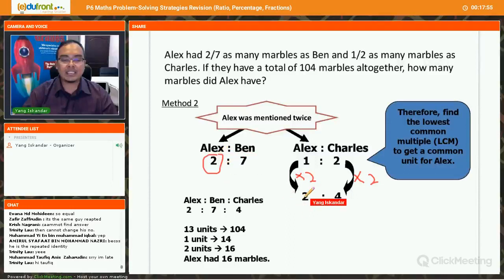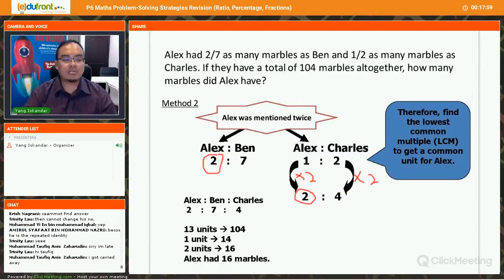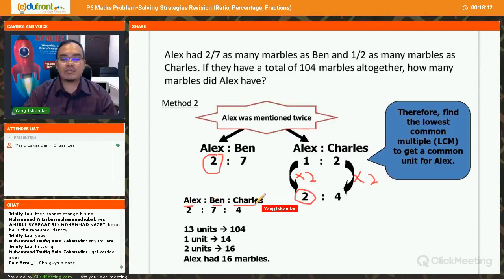So what you can see now, Alex is 2 units in the first ratio and the second ratio is also 2 units. Okay? So once you make the units for Alex the same, then you can make comparison. So we can put together Alex is to Ben is to Charles. The ratio now is 2 is to 7, right? Is to 4 for Charles. Okay? So now you can put all the two ratios together.